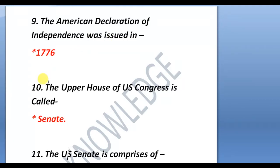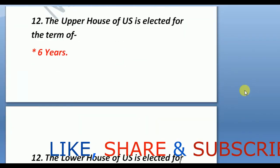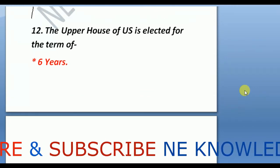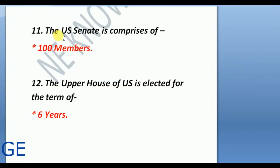Next question: the upper house of the US Congress is called the Senate. The upper house is called the Senate and it comprises 100 members. The US Senate comprises 100 members — that is, two members from each state. With a total of 50 states, there are 100 members.